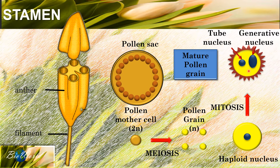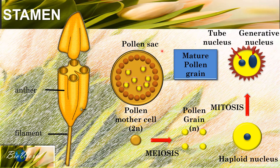The pollen sac will be full of these mature pollen grains. Once the pollen sac bursts open, the mature pollen grains will be free to carry out fertilization.